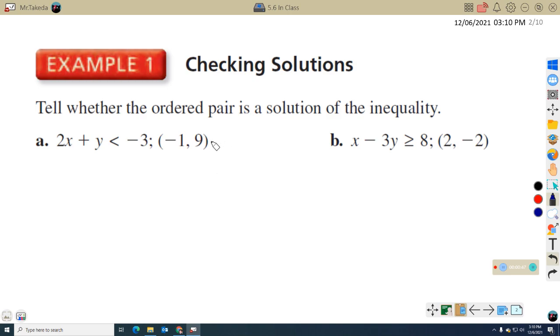How do we know if an ordered pair is a solution? Just like before, we're going to substitute our x and y values into a given inequality and check to see whether or not we have a true statement. I've substituted negative 1 in for x, 9 in for y. I simplify.